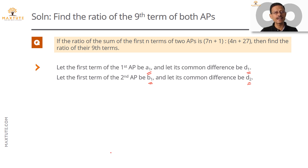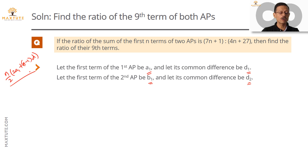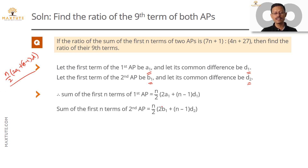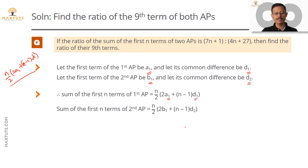The formula to find the sum of the first n terms is n/2 into (2A1 + (n−1)·D). So for the first AP that is n/2 into (2A1 + (n−1)·D1), and for the second AP it is n/2 into (2B1 + (n−1)·D2).